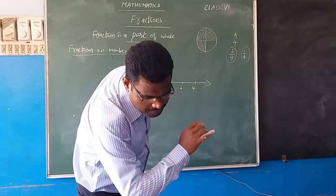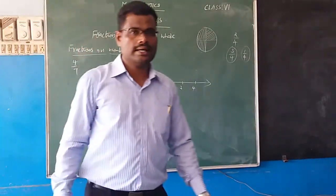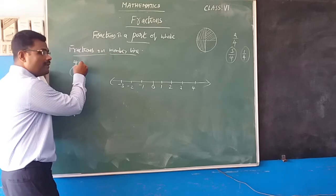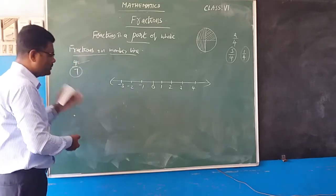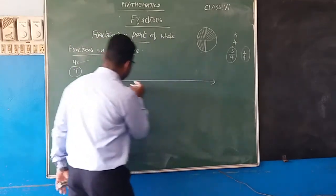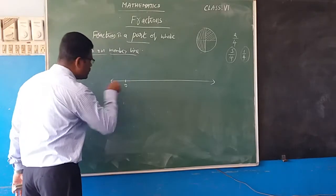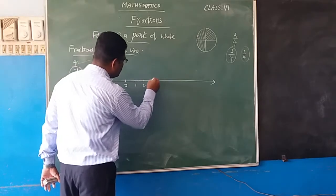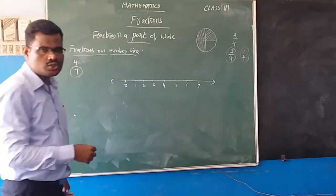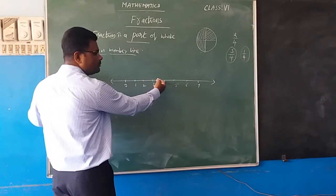For example, represent 4 by 7 on a number line. How to represent 4/7? The denominator is 7, so we need 7 parts. Since 4 is given, no need to go to minus side — start with 0. Mark 1, 2, 3, 4, 5, 6, 7 on the number line. Out of 7 parts, we need to represent 4.